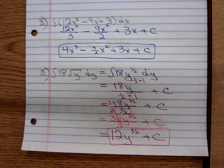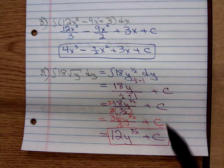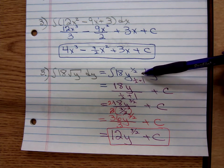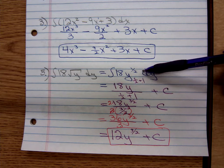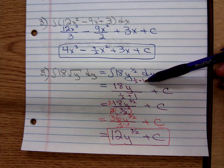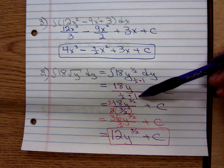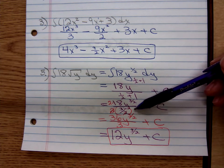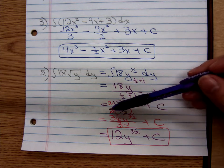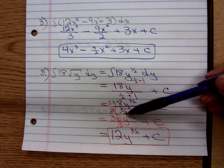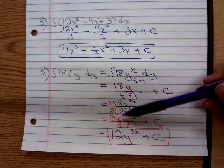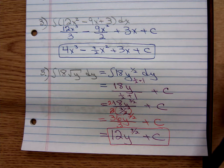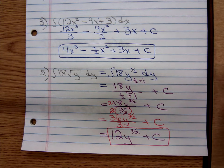Notice what we did. We took, we rewrote the radical using an exponent. That's nothing new. We've been doing that since we started differentiating. Then we added 1 to get the new exponent. And we divided by the new exponent. Well, we had a compound fraction. We had a fraction down there in the denominator. So we multiplied above and below by 2. 2 times 18 gave me the 36. The 2s cancel, leaving me with the 3, simplifying to y to the 3/2 plus C.